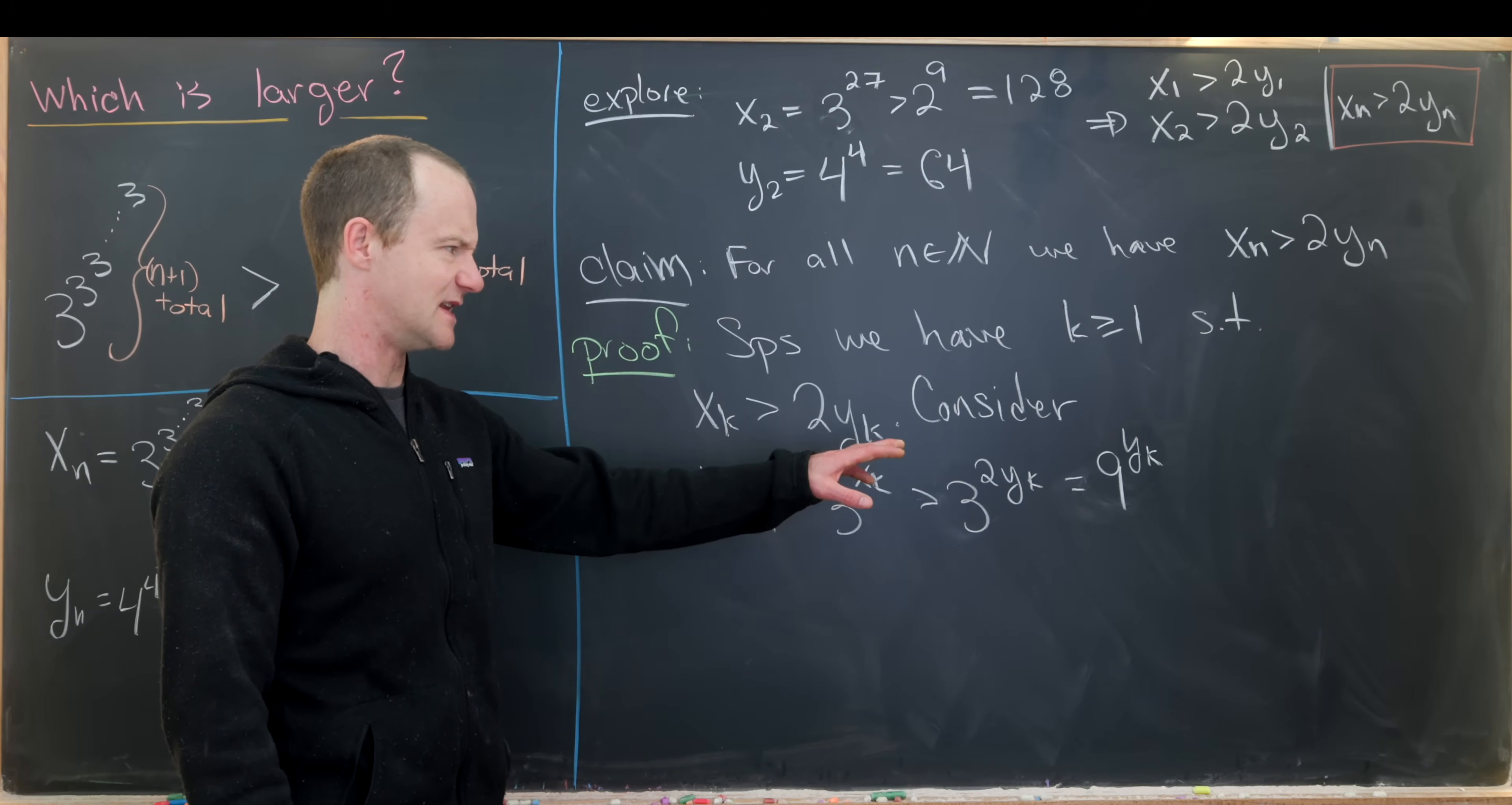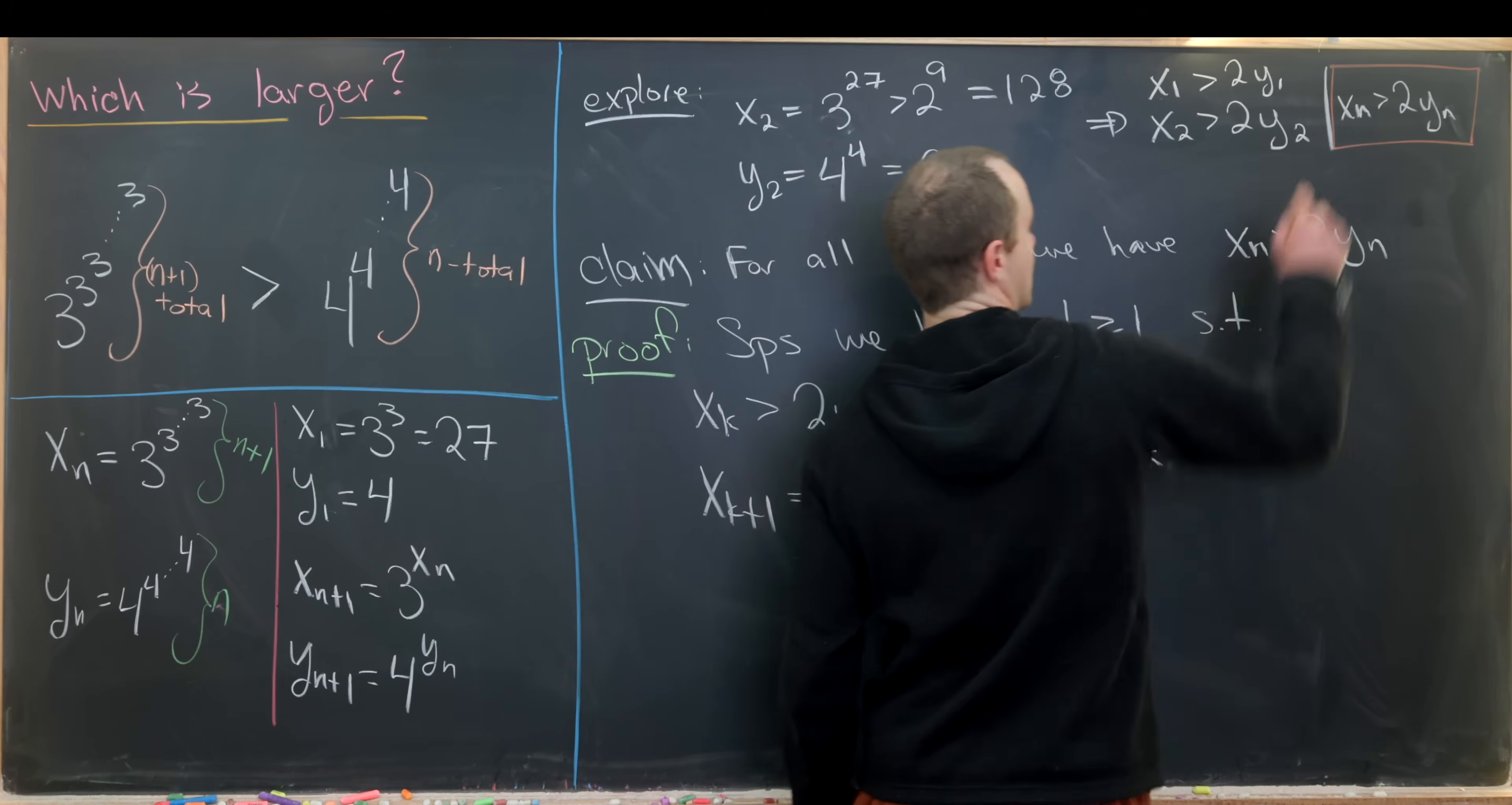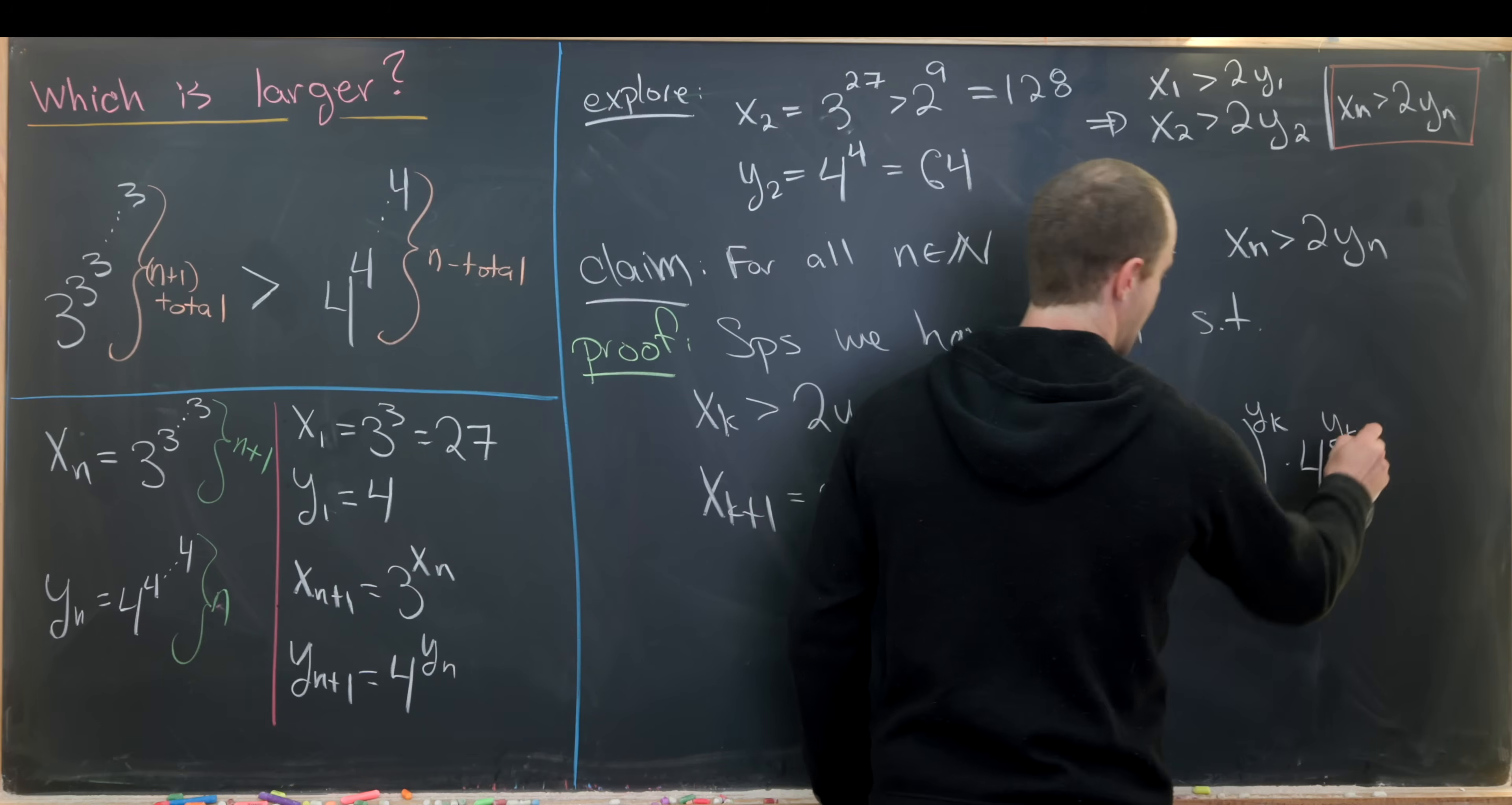But now let's notice that 9 is bigger than 2 times 4. So this is where we want to get that into this. This is the point where we notice that 9 is bigger than 2 times 4 and we start building the inequality in general. So let's notice that this is the same thing as 9 over 4 to the yk times 4 to the yk.